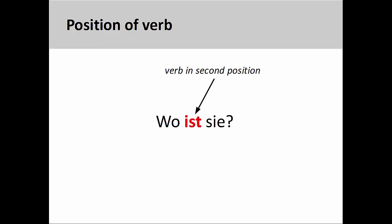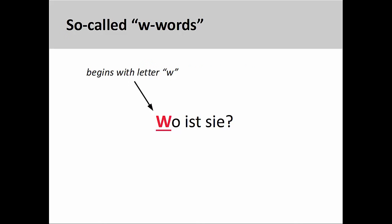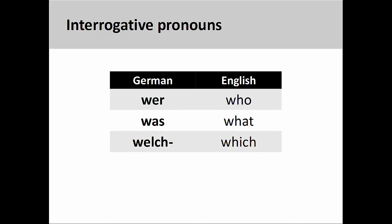We will see in a later presentation that the verb comes in the first position in yes-no questions. Finally, as is the case with most English interrogative words, it is useful to note that German interrogative words begin with the letter W. For this reason, they are often called W words. In German, Vee-Vörter.